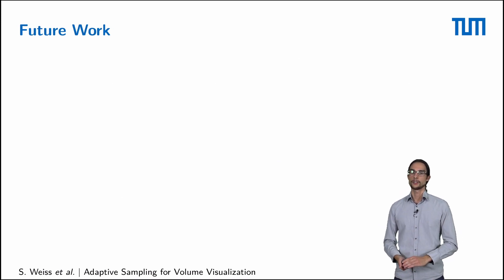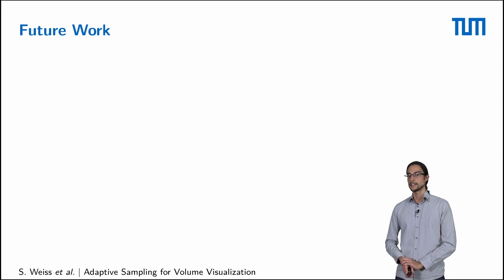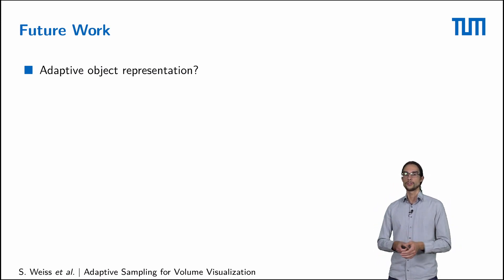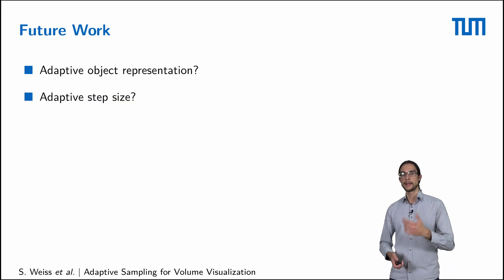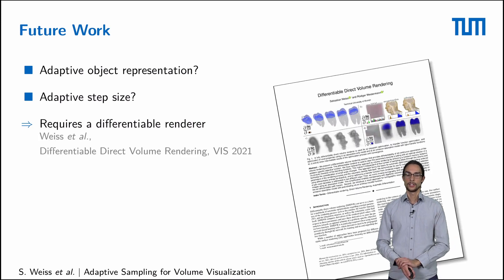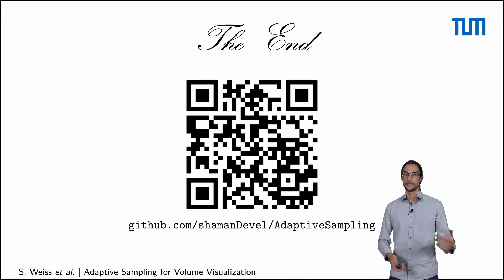This brings me to the end of our talk. We have presented an adaptive sampling pipeline for volume rendering. We think this basic idea on how to adaptively sample can be extended — for example, to an adaptive object representation, like deciding where to use which mipmap level in a large volume, or it can be used to adapt the step size. However, this requires a differentiable renderer, and a first step in this direction was taken by a follow-up work of ours on differentiable direct volume rendering, also presented at this conference. Thank you for your attention, and the code with all the data is available online.